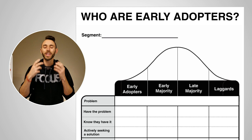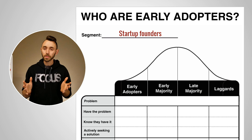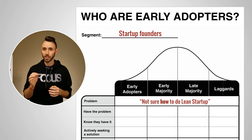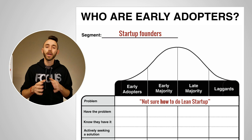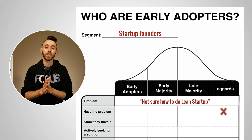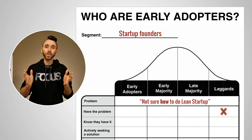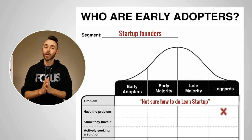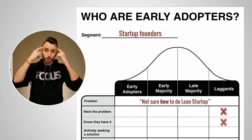Let's walk through an example. Say the customers you're going to serve are startup founders, and the problem you want to help them solve is they're not quite sure how to do lean startup — they buy into the theory, but have difficulty applying the principles. A laggard is someone who falls within the customer segment but does not have the problem we're trying to solve. That could be someone very adept at applying lean startup — like Eric Ries, Steve Blank, or Ash Maurya — or someone who doesn't subscribe to lean startup at all. Because they don't have the problem, don't know they have it, and aren't actively seeking a solution.